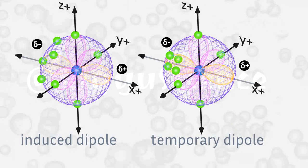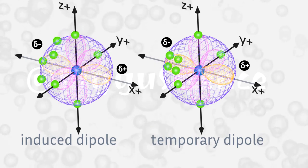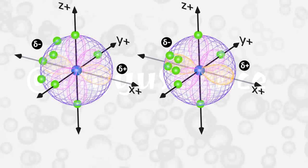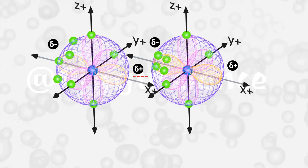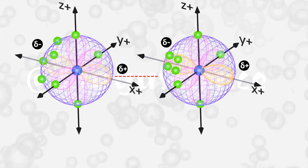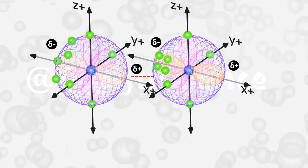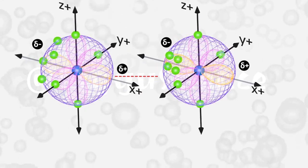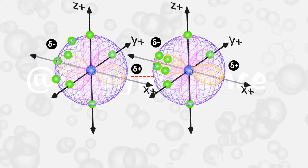Induced dipole is also a temporary dipole. It only distinguishes who influences whom. The positive and negative polarities will attract each other. The attractive force between the two temporary dipoles is known as the London force or dispersion force.